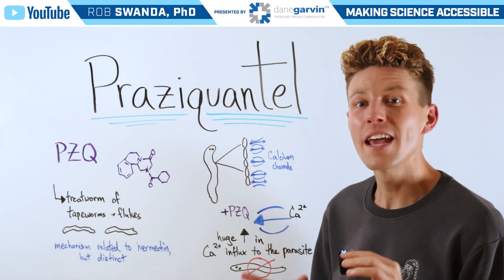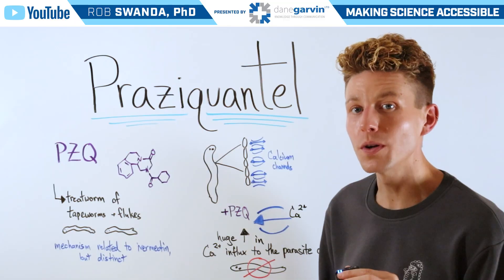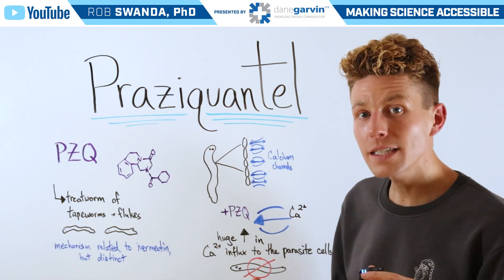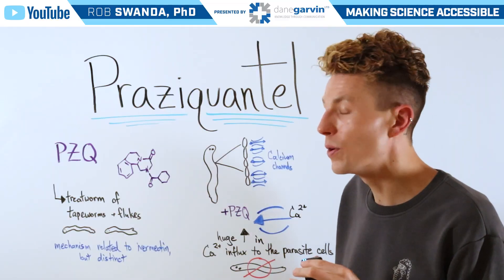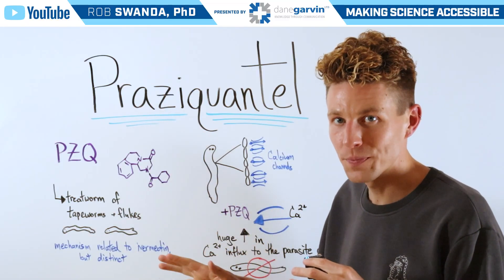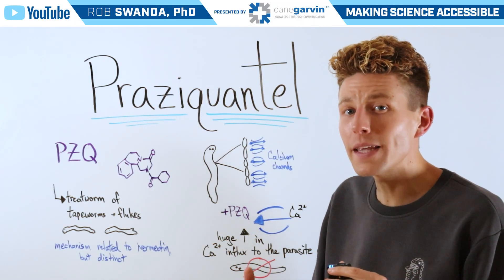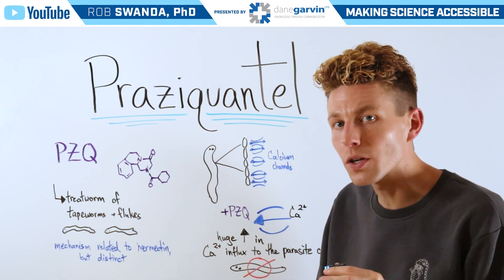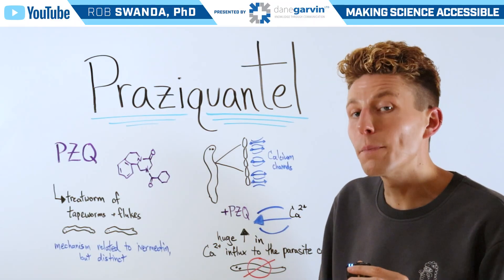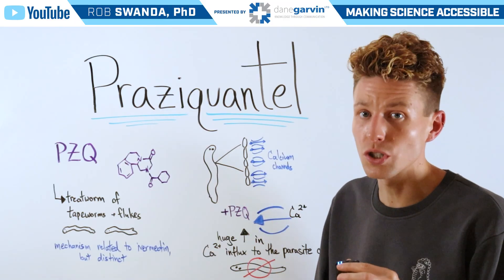We're continuing our education in the antiparasitic space by breaking down another molecule that was requested, known as Praziquantel. It has an abbreviation of PZQ and a molecular structure depicted in purple. It's often used for the treatment of tapeworms and liver flukes, and its mechanism is distinct but similar to another drug I've broken down called Ivermectin — I'll pin that video to the top of this video as well as to this video's description below.